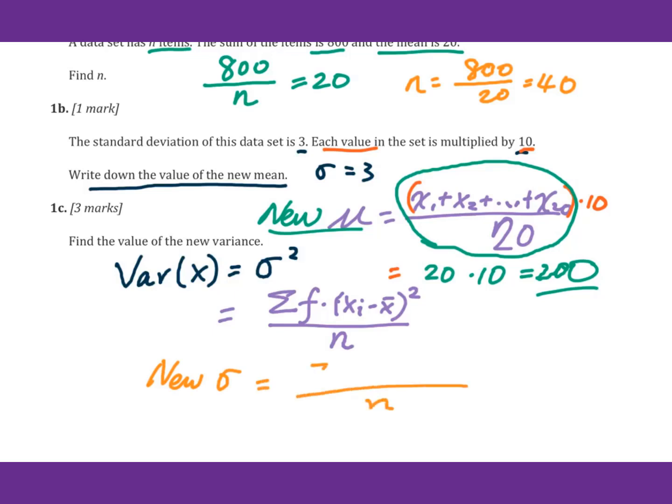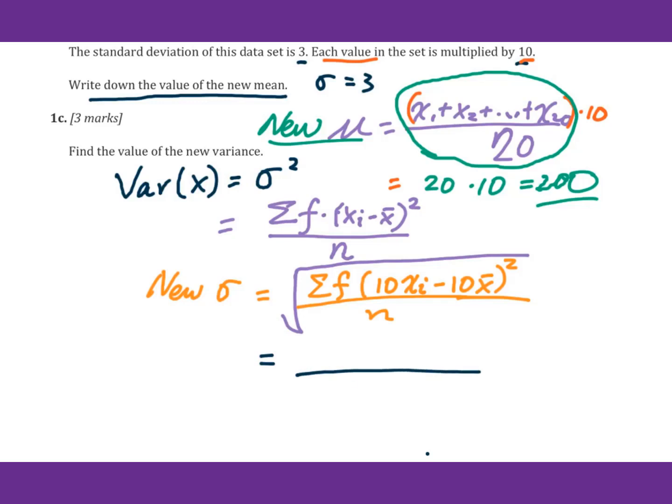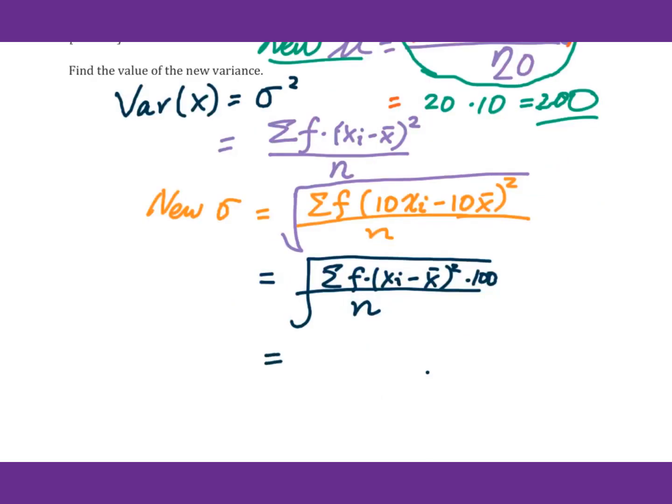The new standard deviation equals frequency won't change. Each of them multiplied by 10, so 10 times xi minus, you know that mean will increase by 10, so 10 times x bar. For standard deviation, don't forget square root. Therefore, you will get f times, I will take this 10 outside, so xi minus x bar squared. Then we multiply by 100.